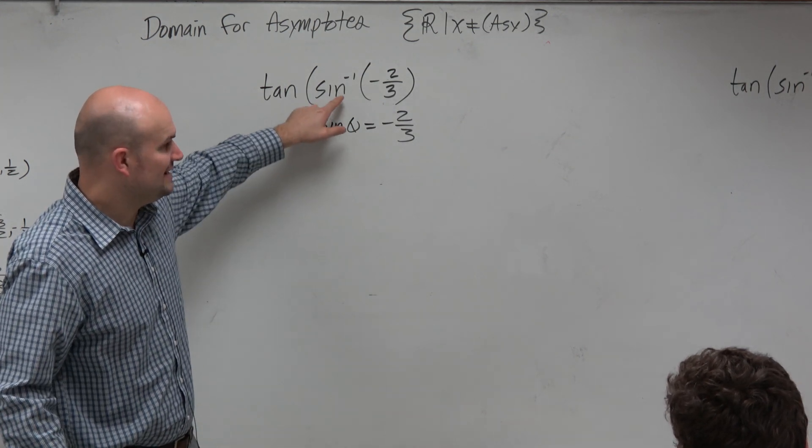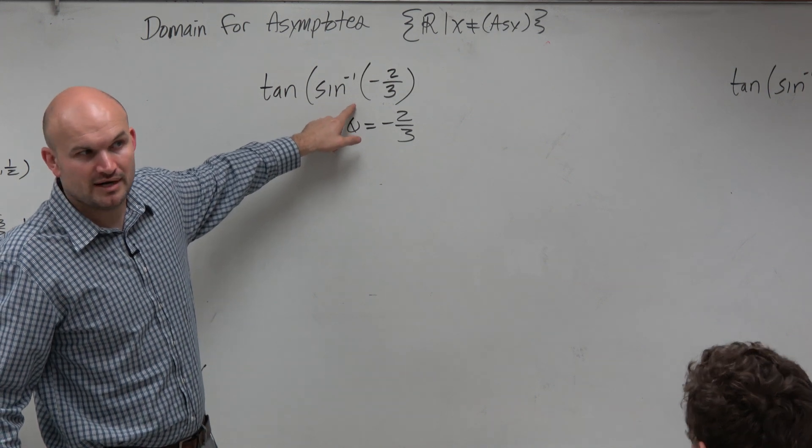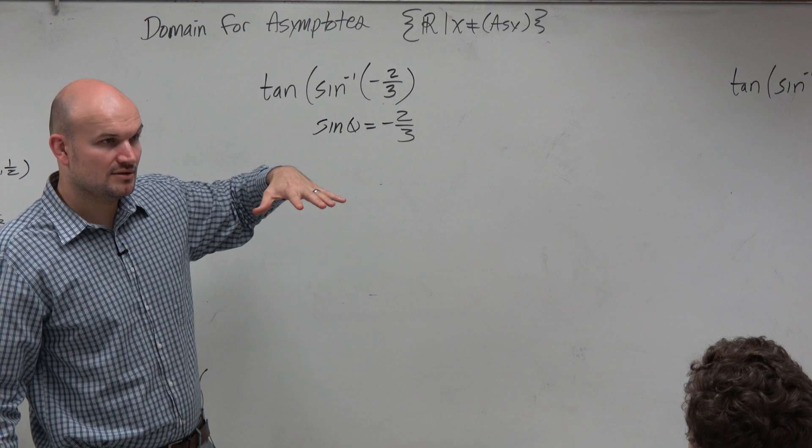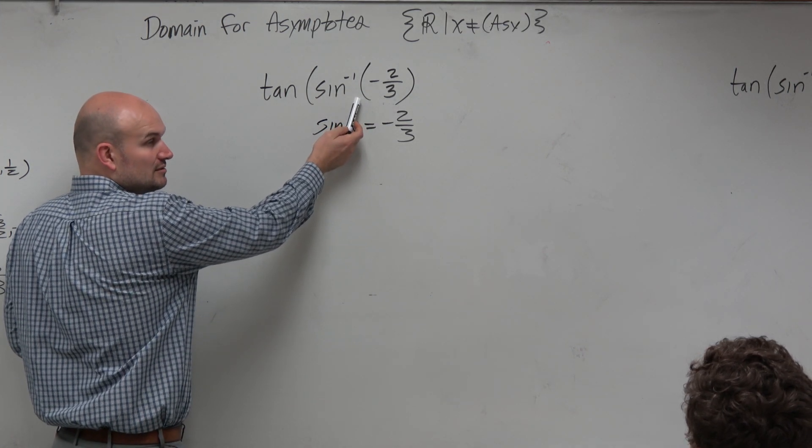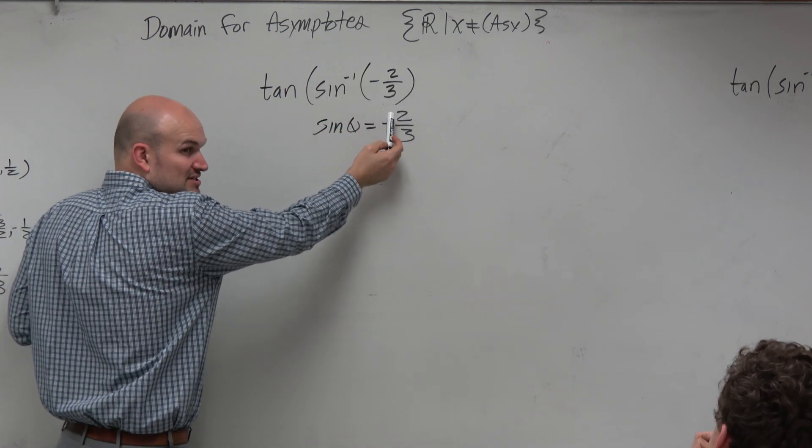What that means is, if I needed to actually figure out this angle, I would have to use a calculator. I'd actually have to type this in my calculator and see what it is. Now, fortunately for us, that's actually not what the question is asking. The question is not asking what's this angle? It's really saying, what is the tangent of the inverse of that?